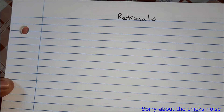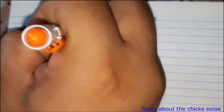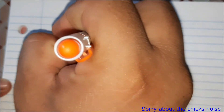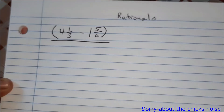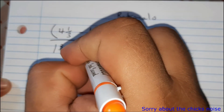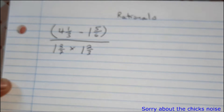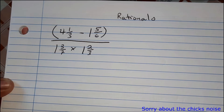The first example will be as follows: we have four and one-third, minus one and five-sixths, over one and three-sevenths, times one and two-thirds. If you notice, we have a bracket at the top and then at the bottom we don't have one.